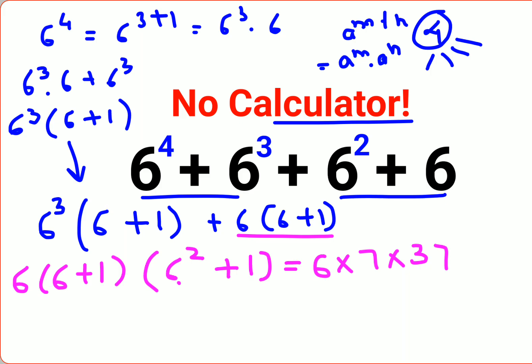So now when you do this, you multiply 7 and 37. You get 6 × 259, which eventually gets you 1554. So we can say the answer for this one is 1554.